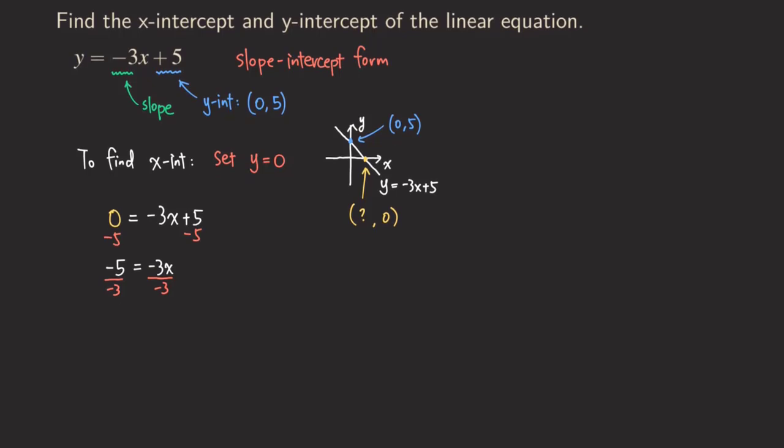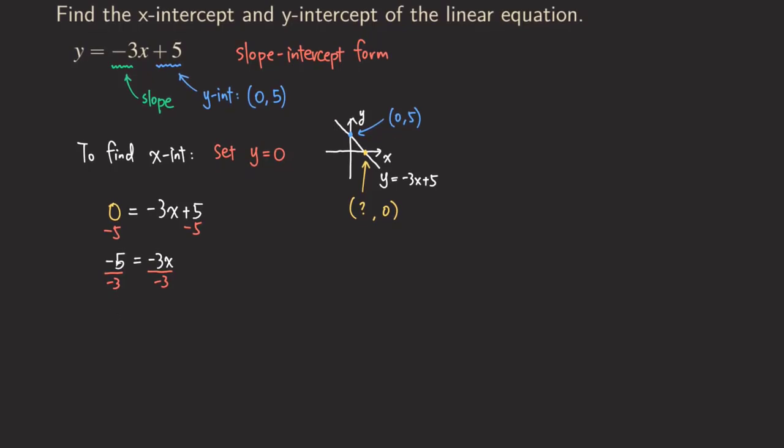And then we are going to get what? We are going to get negative 5 over negative 3. The negative signs will get cancelled. So we get 5 over 3. And then what do we get here? The negative 3s will get cancelled. So we just get x. And so we already figure out the answer.